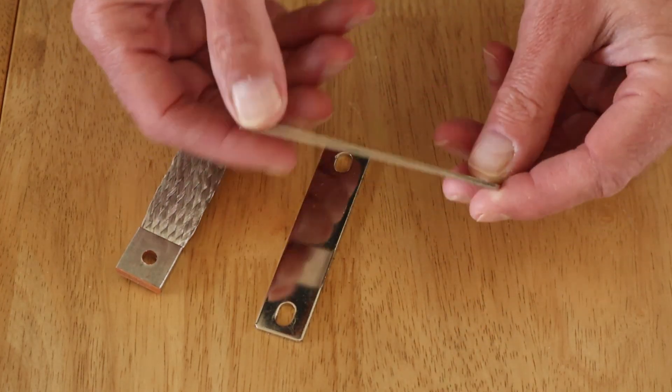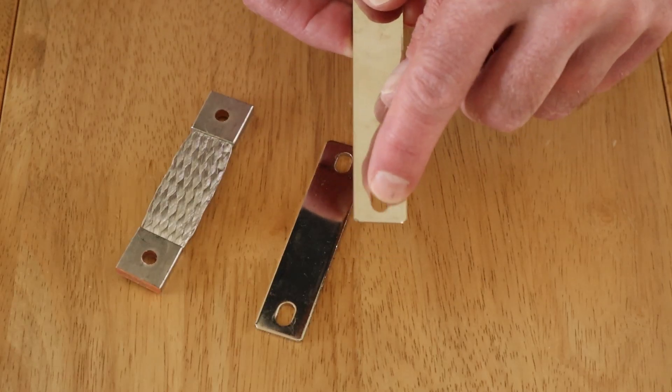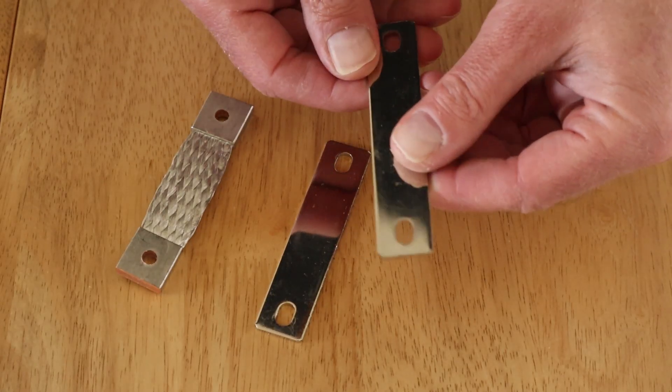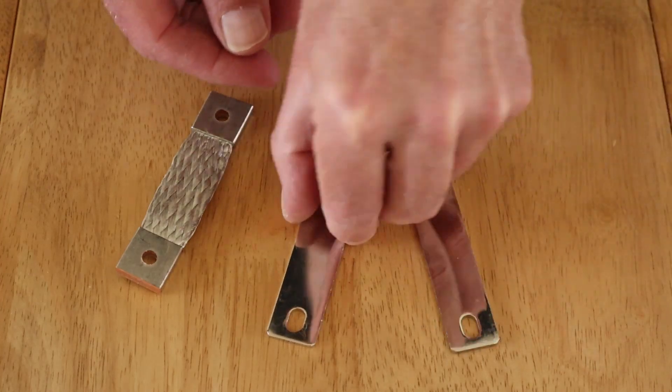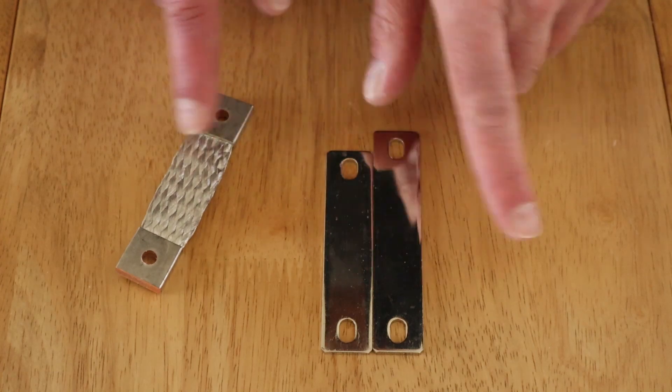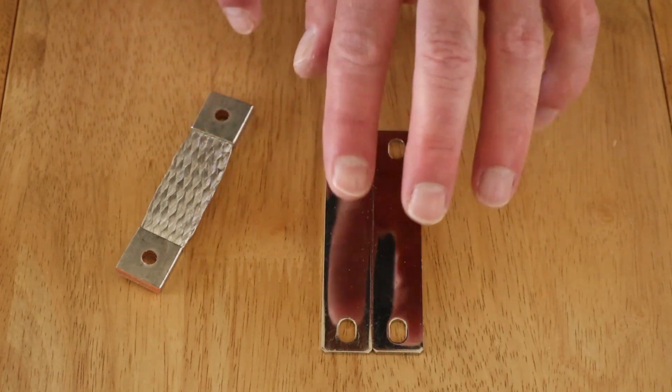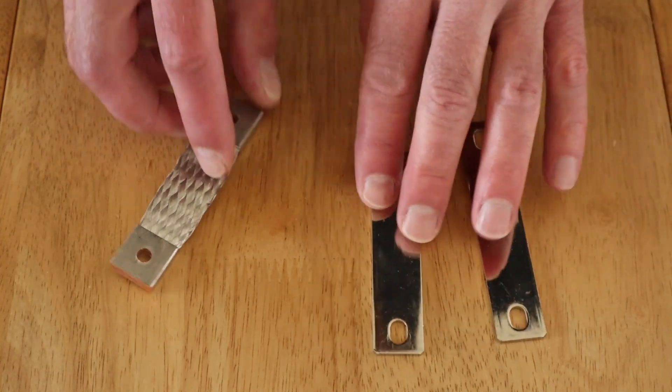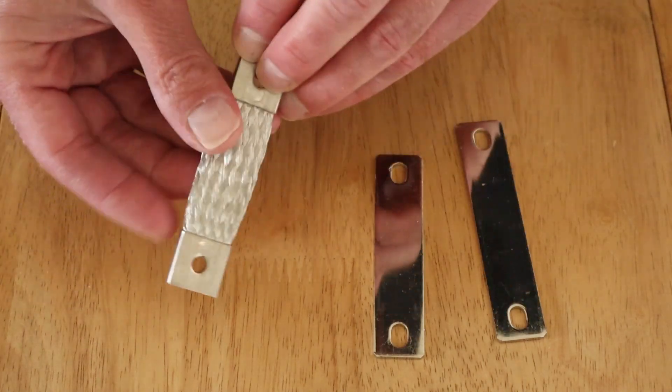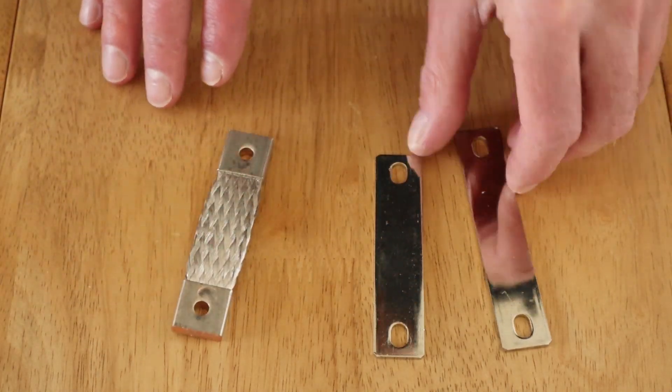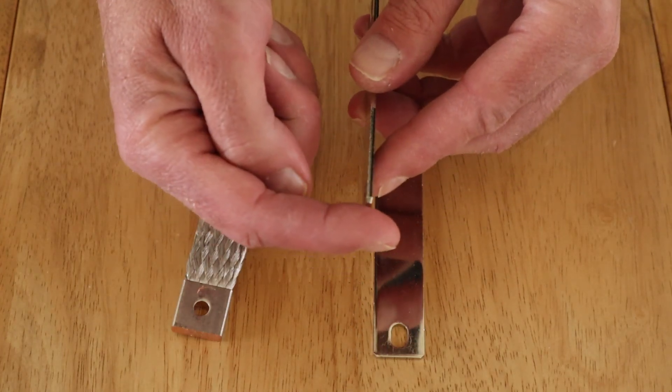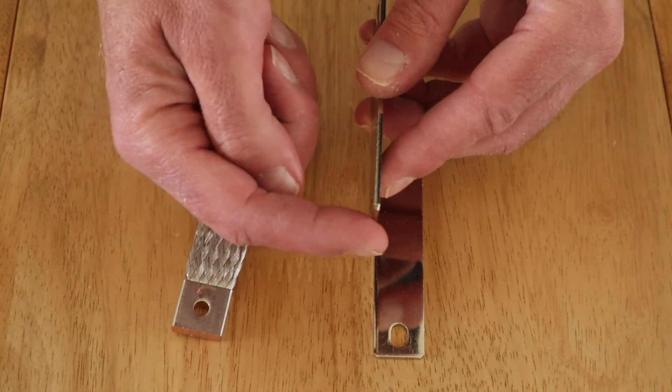Again, these are standard bus bars that you'd get. They've got a slightly larger hole there to allow for adjustment when you're setting them up, and there's a smaller version there. Obviously they come in all shapes and sizes, and these are obviously cheaper per unit than these because there's a lot more going on with these.